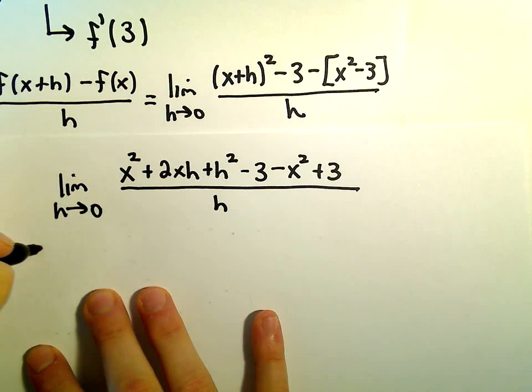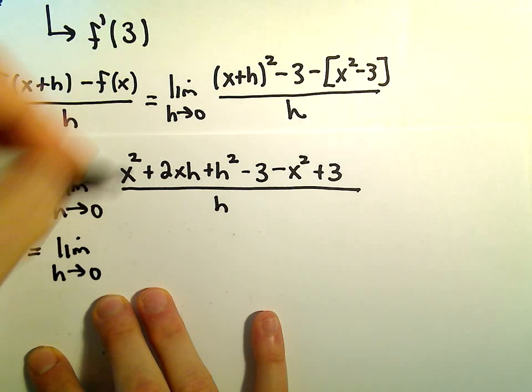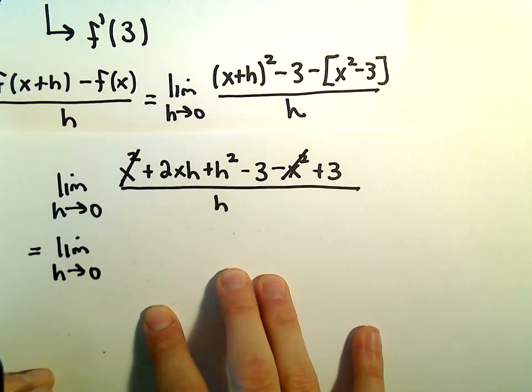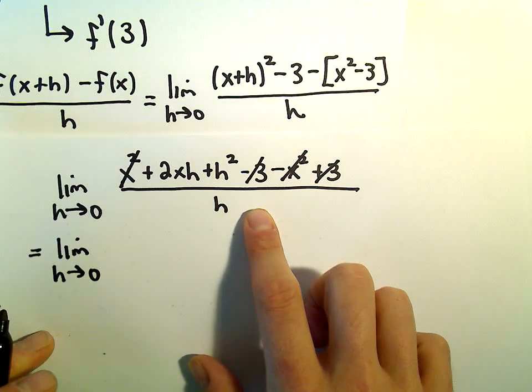We can cancel some terms. The limit as h goes to 0, we have x² - x², so that's gone. We have -3 + 3, so that's also gone.